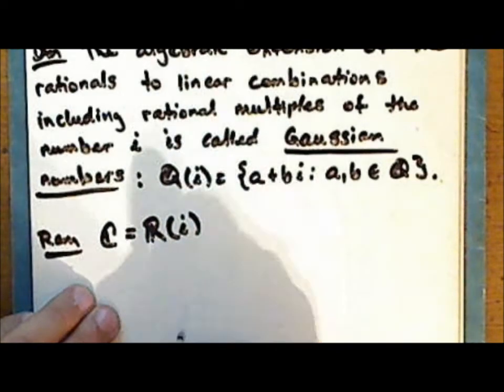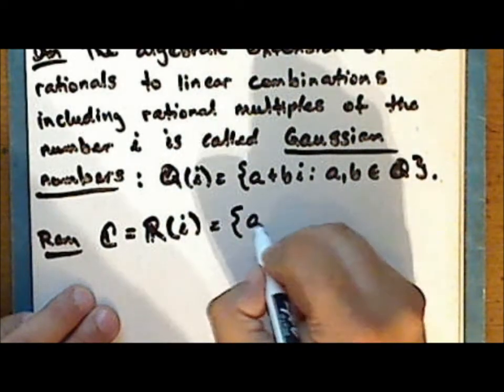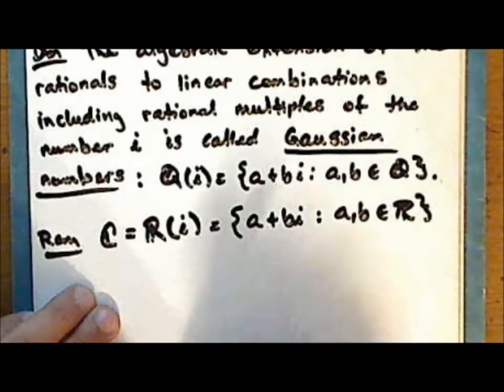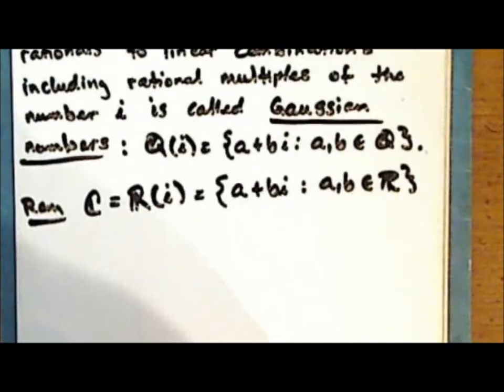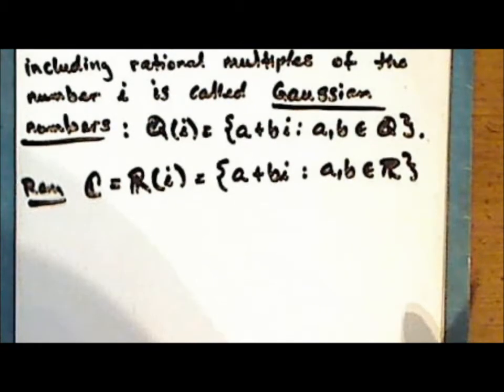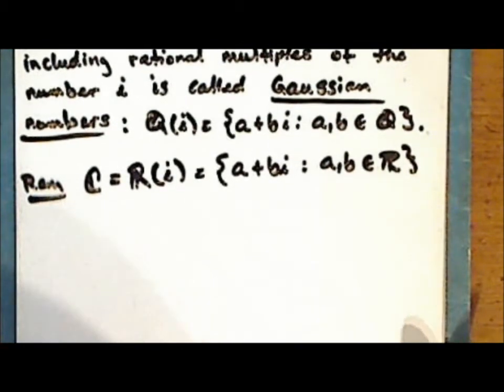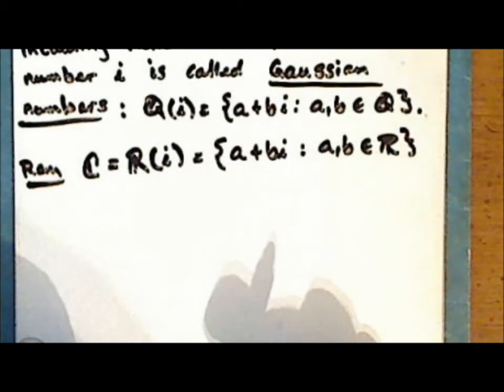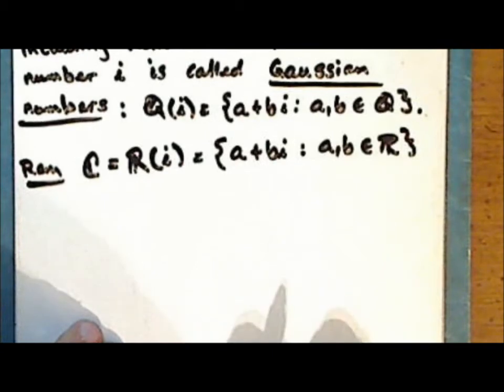This is in honor of the mathematician Karl Friedrich Gauss. So from the example that we just looked at, it is evident that every Gaussian integer is an algebraic integer.